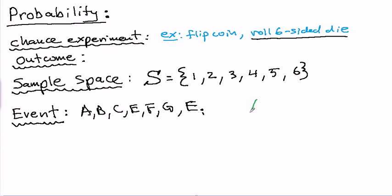Let me define an event, A, to be the event of rolling an odd number. So let me list all, in set notation, all the possible outcomes that satisfy my definition of event A, which is rolling an odd number.